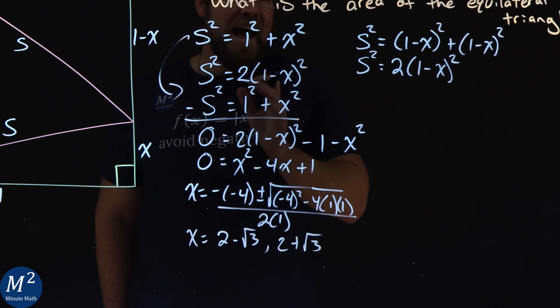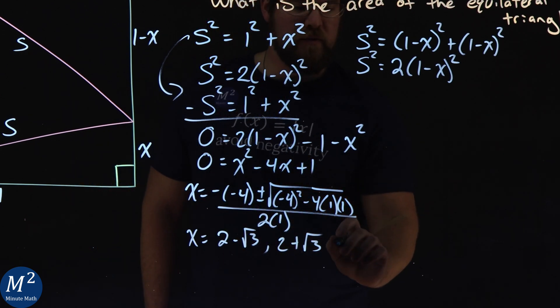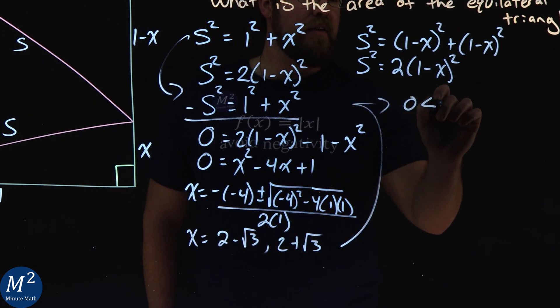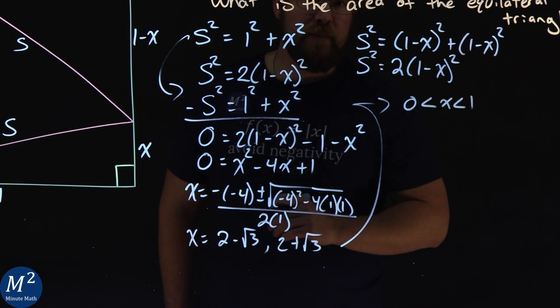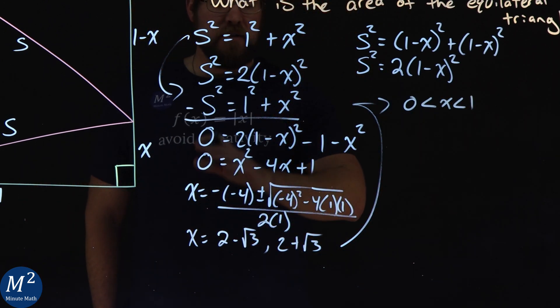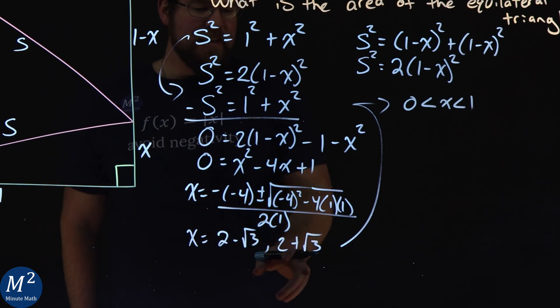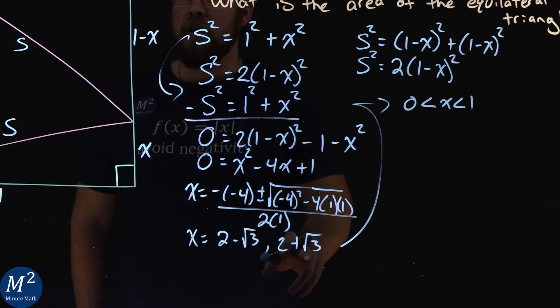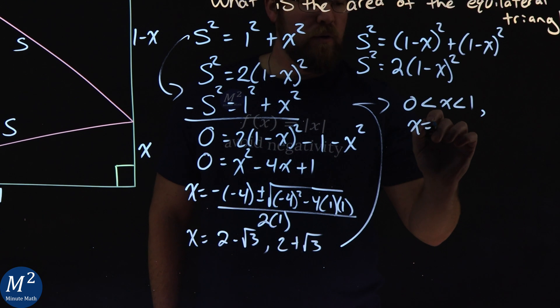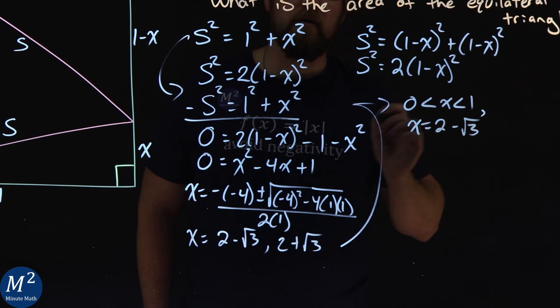But one thing we know is that X has to be between 0 is less than X, which is less than 1. X has to be some value between 0 and 1. And that eliminates here 2 plus square root of 3. And so, X has to equal 2 minus square root of 3.